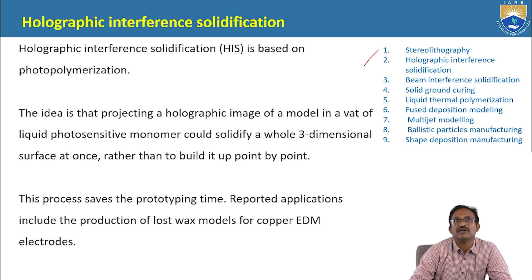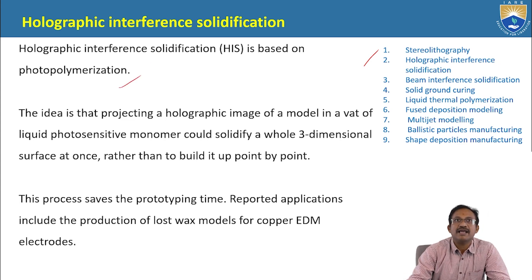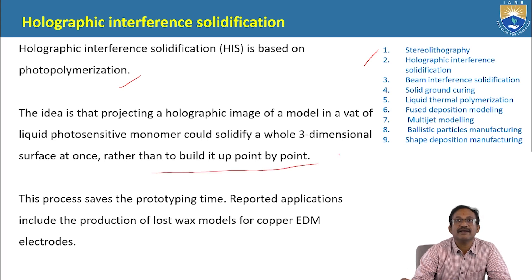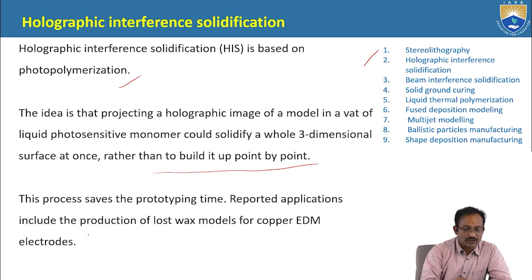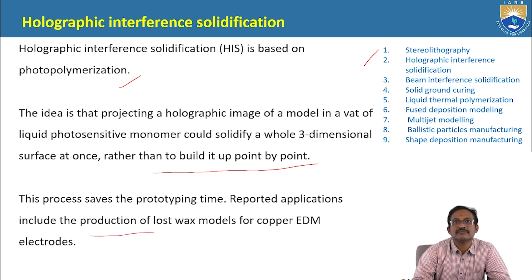Holographic Interference Solidification: HIS is based on photopolymerization. The idea is that projecting a holographic image of a model in a vat of liquid photosensitive monomer could solidify a whole three-dimensional surface at once, rather than building it up point by point. This process saves time in prototyping. Reported applications include the production of lost wax models for copper EDM electrodes.